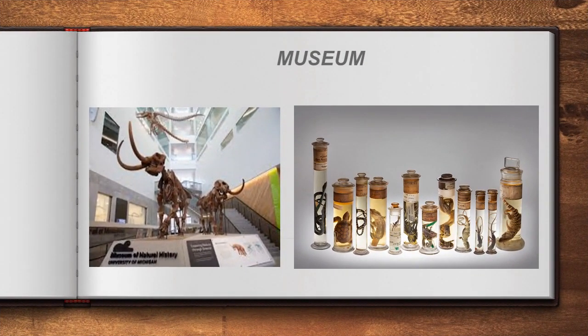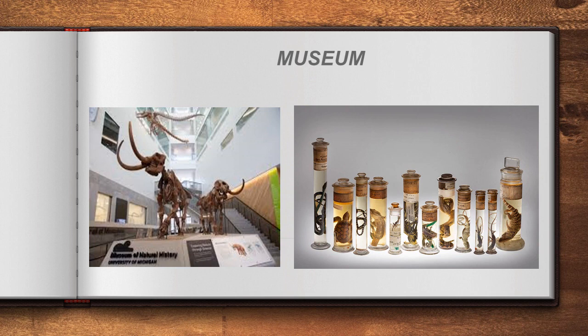A museum is a collection of preserved plants and animals, including extinct and surviving species. It is useful for taxonomical study because you can closely observe the morphology and characters of animals in a preserved condition. For example, you can examine a snake specimen safely in a museum, which would not be possible in its natural environment.